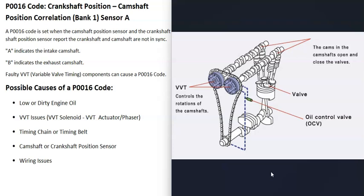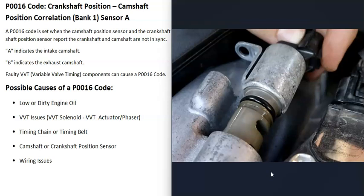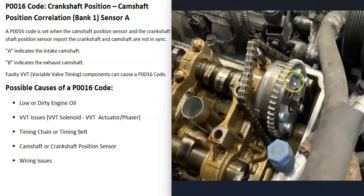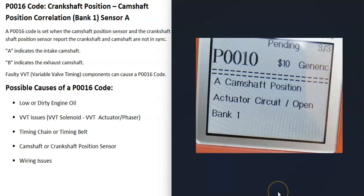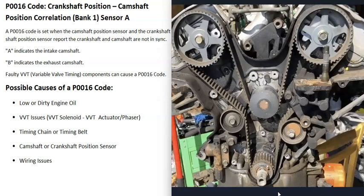The next possible cause is a problem in the variable valve timing system — this may be named differently depending on the vehicle and manufacturer. This includes components like the variable valve timing solenoid, actuator, or phaser. If anything goes wrong with these components it can cause problems on bank one camshaft A. Usually if that happens you'll also get related codes, such as a camshaft position actuator circuit open on bank one.